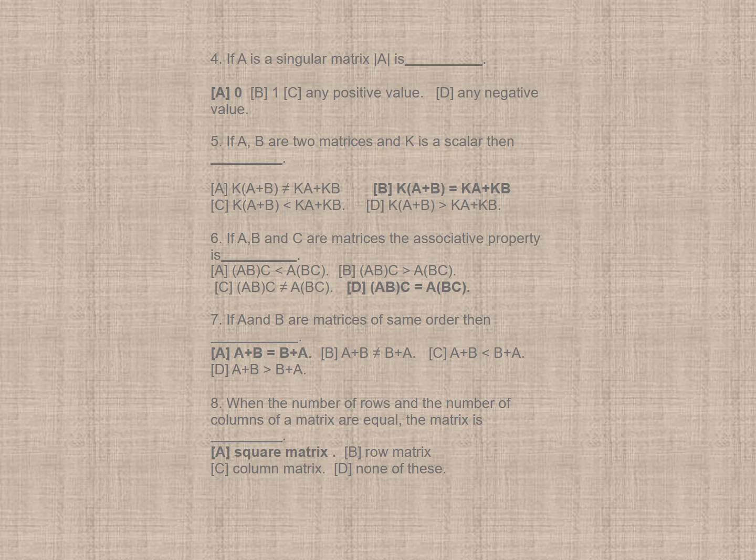Question 5. If A, B are two matrices and K is a scalar, then your correct option is B, K into A plus B is equal to K times A plus K times B.